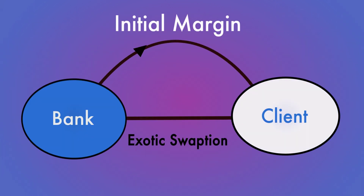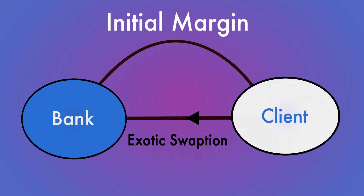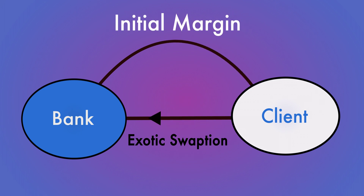So thus far, from margin valuation adjustment, we've been looking at the initial margin that is attracted by the client trades specifically. So an exotic swaption with a client gives rise to a certain amount of initial margin. It's exotic, it's non-cleared, and that initial margin is determined by ISDA SIMM.